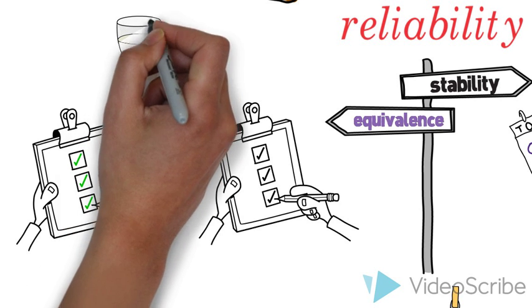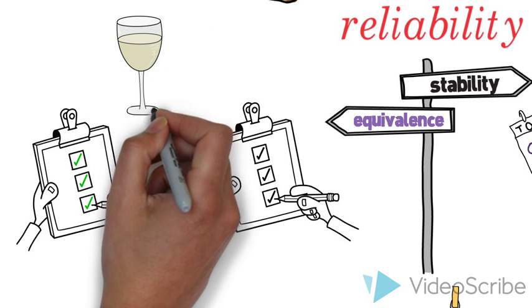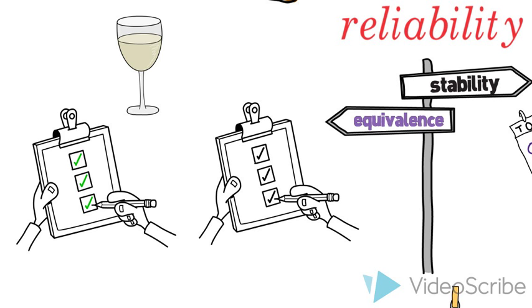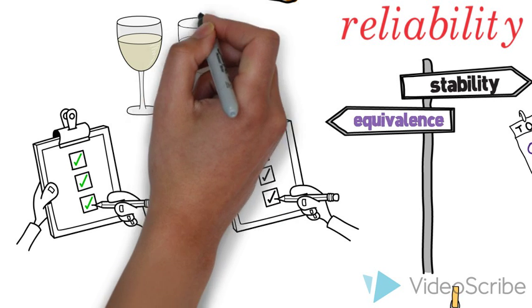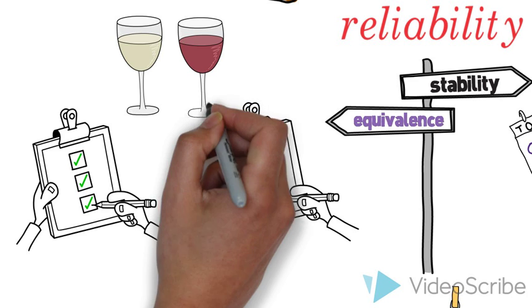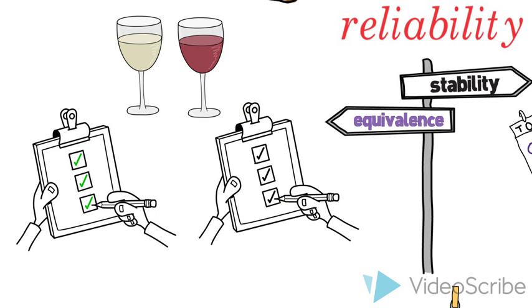Let's say you're taking a survey about your drinking habits, and you're asked how many drinks a week you typically have. If the interviewer asking you is rude or judgmental, could that affect your answer? Of course it could.